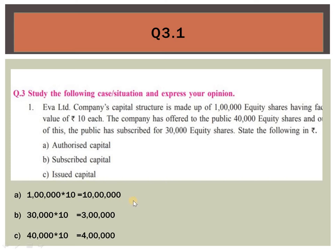The subscribed capital of EVA Limited is for 30,000 equity shares of face value rupees 10 each — that is 30,000 multiplied by 10 — which gives rupees 3 lakhs. Then comes the issued capital, which is capital that has been offered to the public. Here you can see the company has offered 40,000 equity shares.